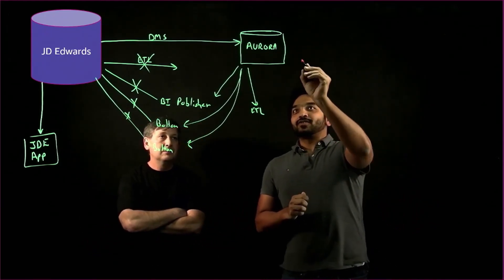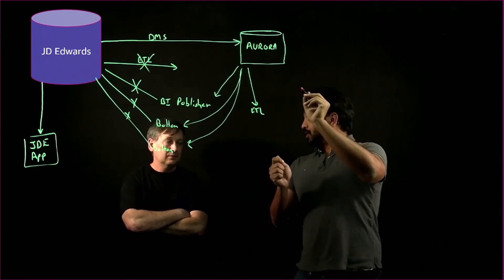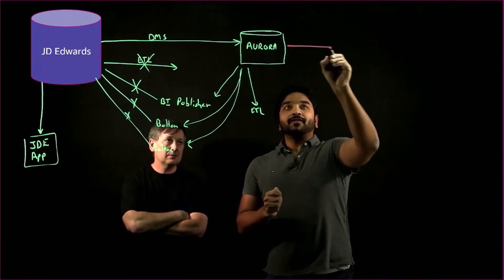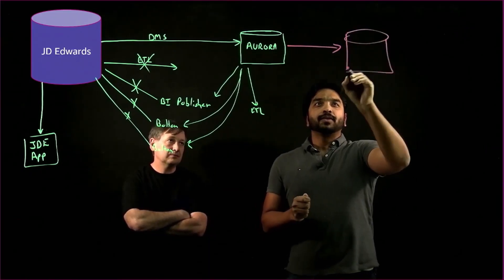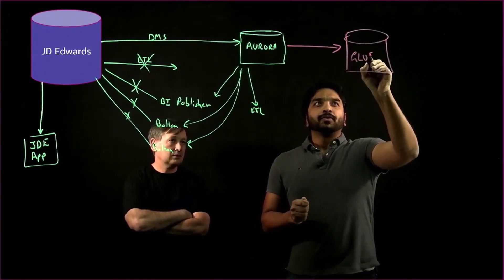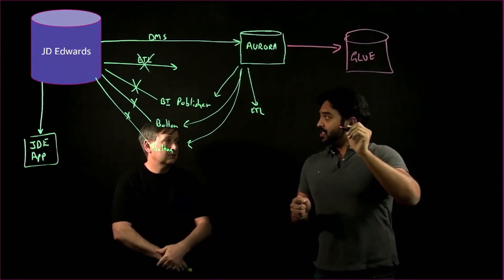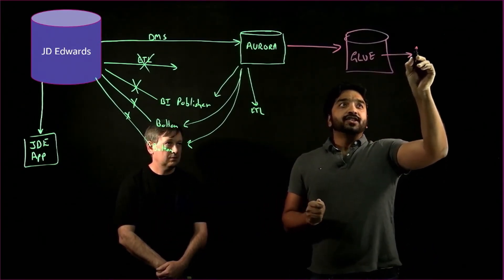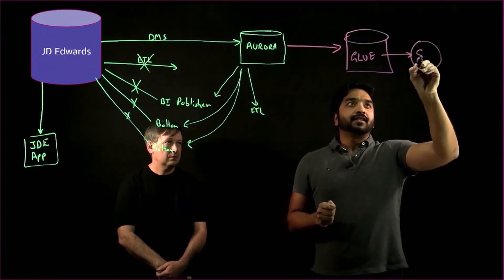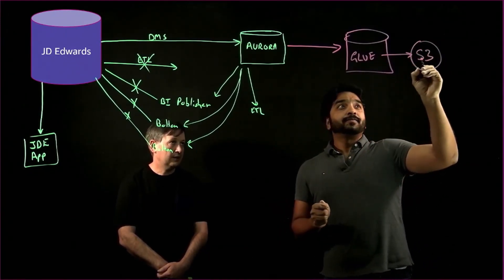So, having the data into Aurora, we have our native services like AWS Glue, which are the ETL services that can extract data out of Aurora and put that into services like S3, which is a data lake environment. Right, right.